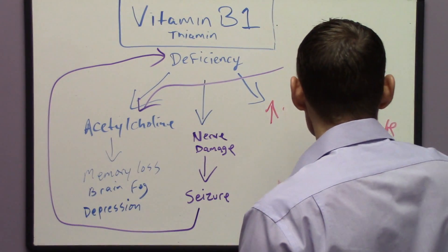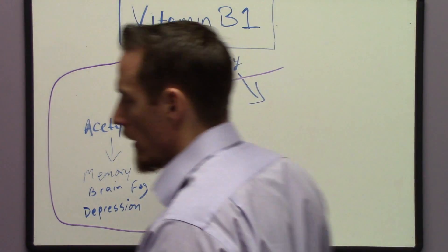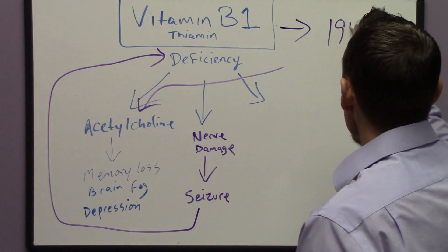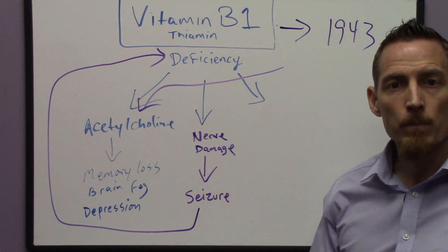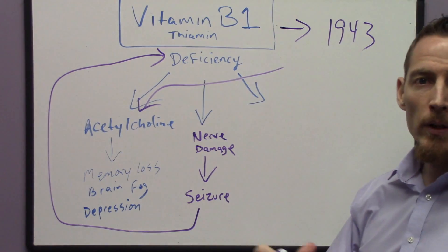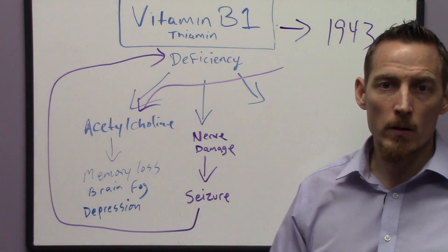If we take a little quick history lesson, what we know is that in 1943, the U.S. government banned the sale of grain, processed grain primarily, because of the known relationship to beriberi. In essence, when you processed grain and you made breads and you made other things out of it...